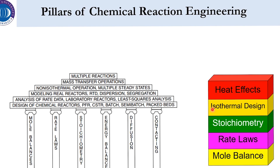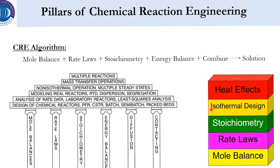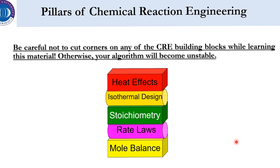Talking about the pillars of CRE: Fogler defines five pillars — mole balance, rate law, stoichiometry, isothermal design, and heat effects. For a complete design scheme of an isothermal system: start with mole balance, then rate law, then stoichiometry, combine these, then evaluate. For non-isothermal design, after stoichiometry we add energy balance, then combine and evaluate to get the final results.